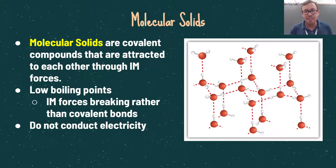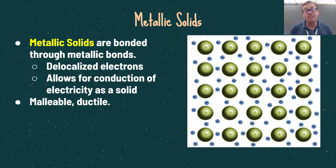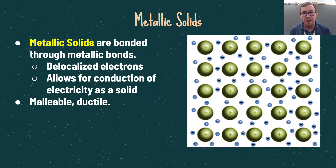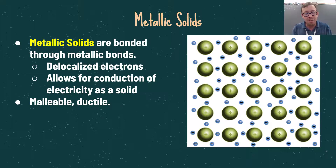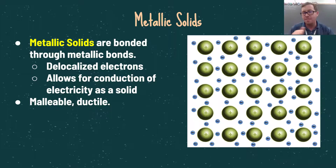Molecular solids also do not conduct electricity because they do not have free-flowing electrons. The last type is metallic solids, bonded through metallic bonds which contain delocalized electrons — electrons not specific to one atom in the structure. This allows metallic solids to conduct electricity as a solid because those electrons are free-flowing. Because the electrons are delocalized, metallic solids are also very malleable and bendable. They are ductile, meaning you can draw them into wires, and malleable, meaning you can bend and mold them.